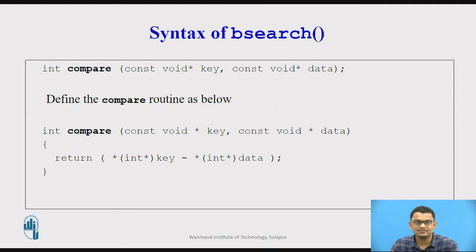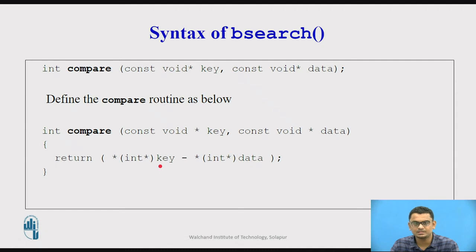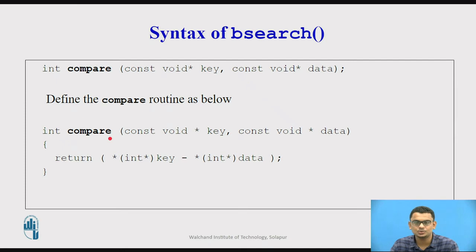You can define the compare routine separately. Simply take the difference between the pointers pointing to the two different values — key and data — typecast it to int, and return it as an integer. You can then pass this compare subroutine as a parameter to the bsearch function.